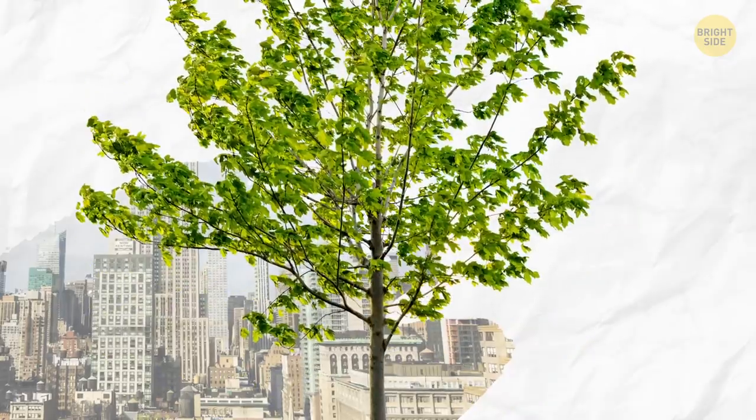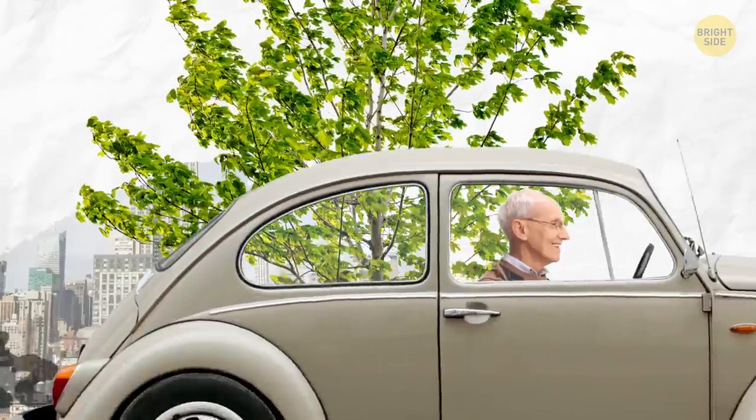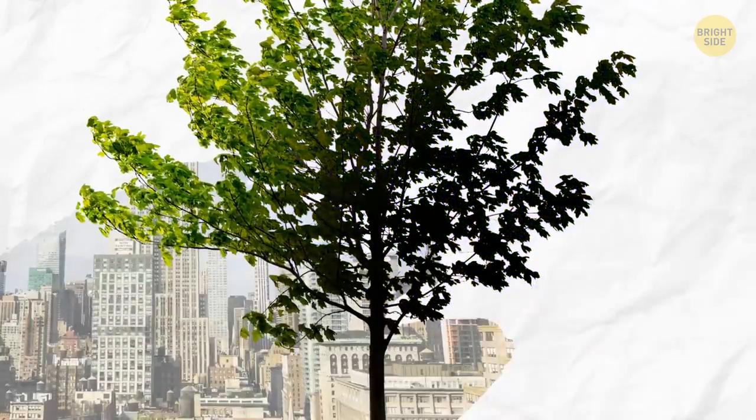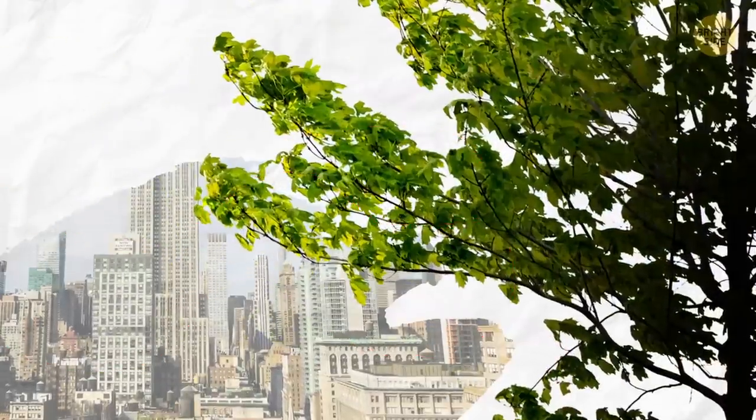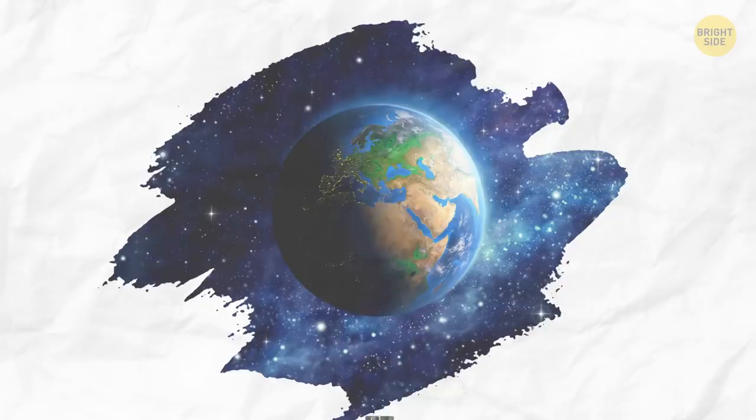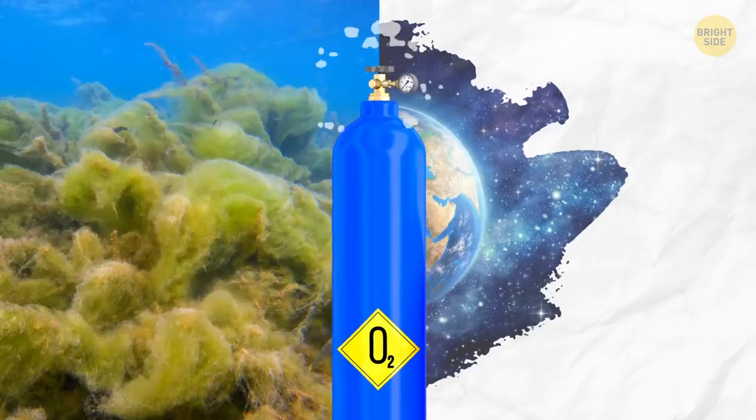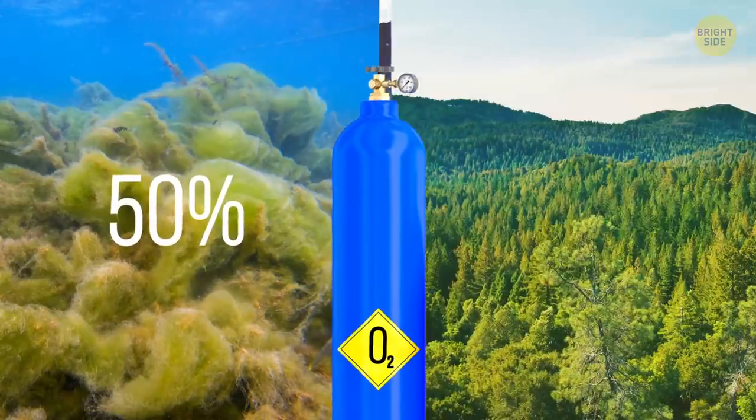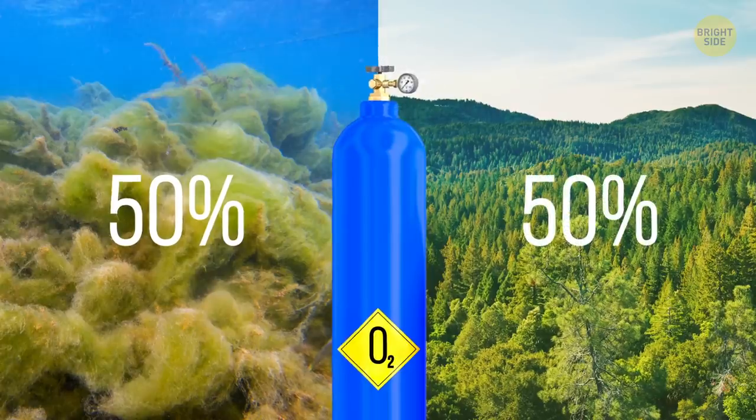Trees don't improve the air quality on city streets. On the contrary, they can make it worse. This is because leaves and branches slow down airflow, causing pollutants like exhaust fumes to get stuck on the trees and settle there. Half of the Earth's oxygen is produced in the ocean by a single-celled photoplankton plant. The other half is thanks to trees, shrubs, and grasses.